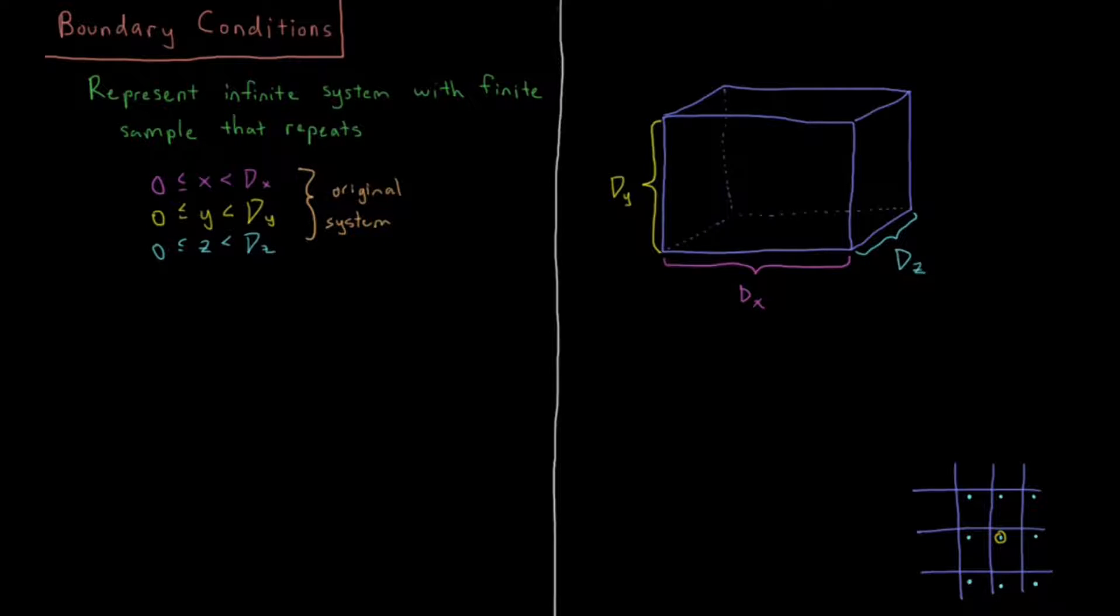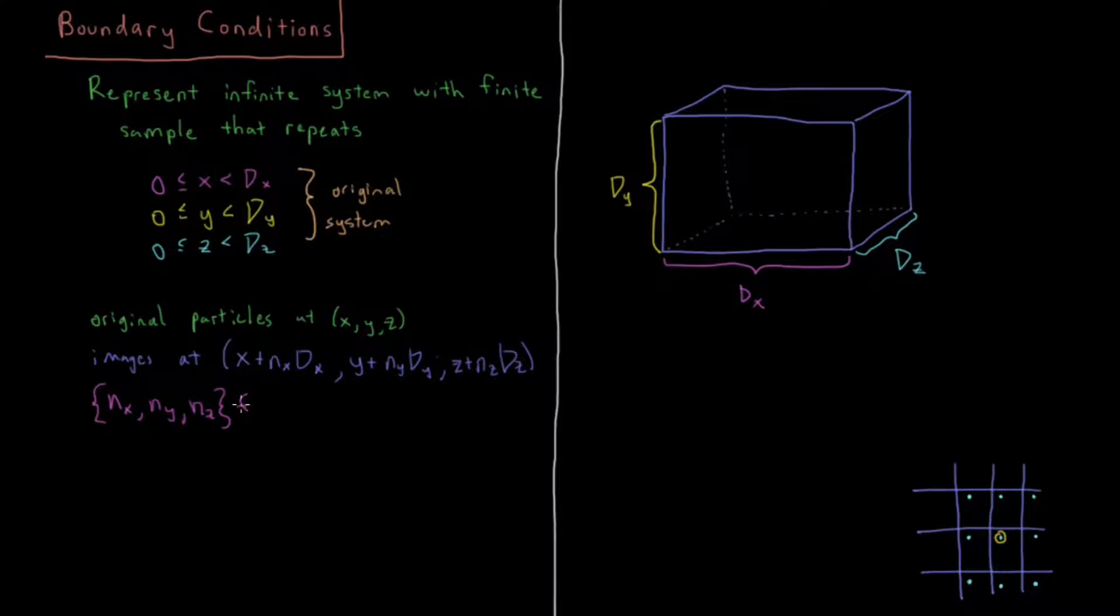What we do is we have the original particles—particles being atoms, molecules, whatever is the minimum component of your system—the original particles at X, Y, and Z will see what are called images or image particles at X plus NX times DX, Y plus NY times DY, and Z plus NZ times DZ. And in this case NX, NY, and NZ are all integers.